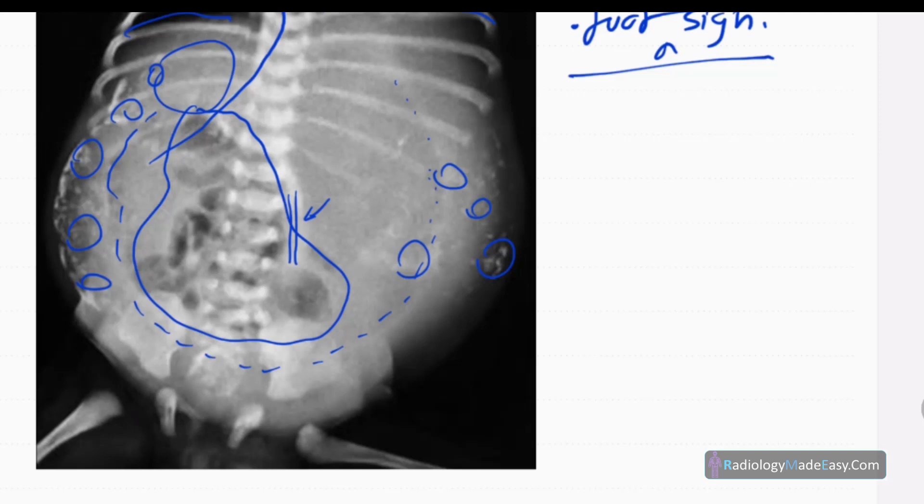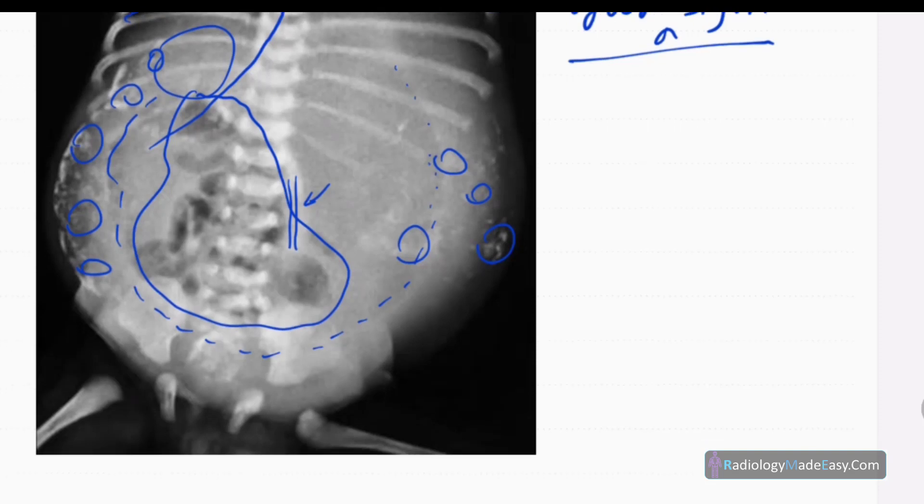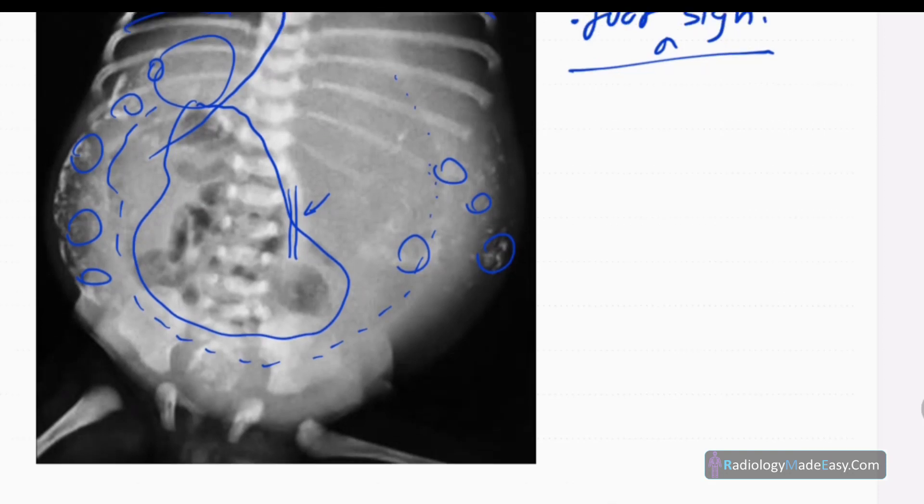There will be pneumoperitoneum and ascites. Probably this patient also has ascites because centrally placed bowel loops are there, so underlying ascites is also a possibility. Next line of investigation is ultrasound scan of the abdomen.